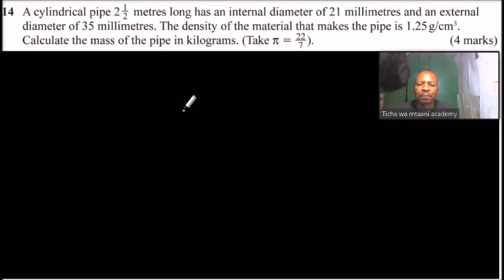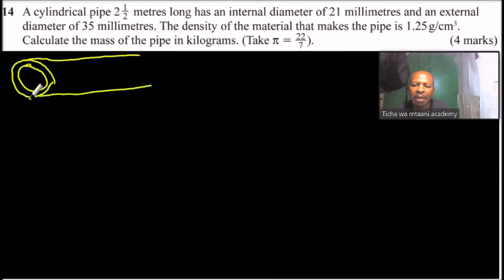Now, we have the pipe here. Maybe it is important that you make a sketch so you can be able to see what is required. So let's assume that the pipe, we have the internal and external diameter. So that's our pipe. It is 2.5 meters. We can call this is r, and the other one we call it the capital R.